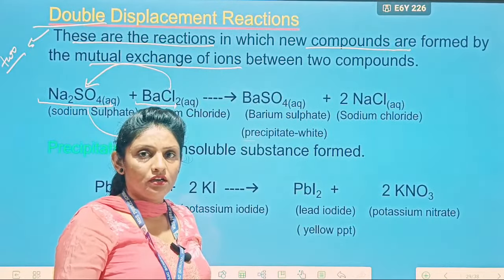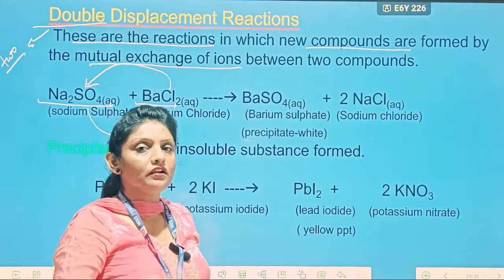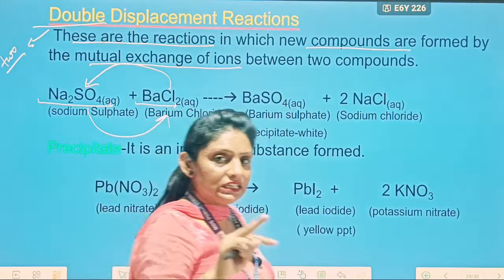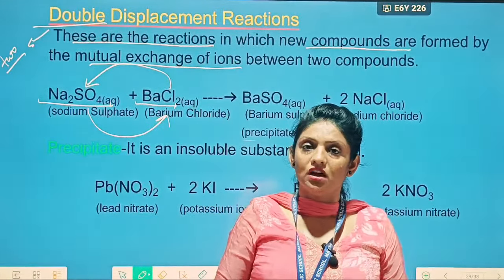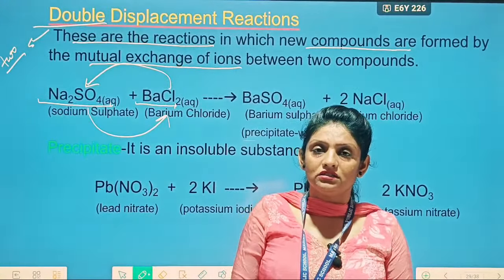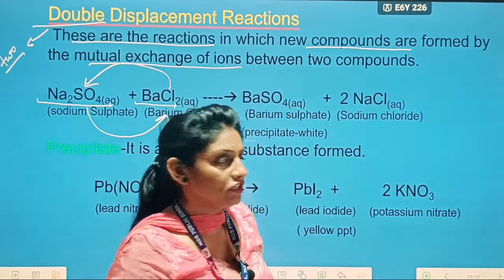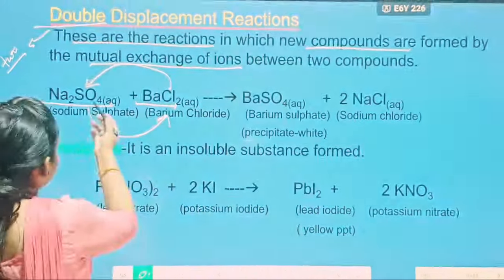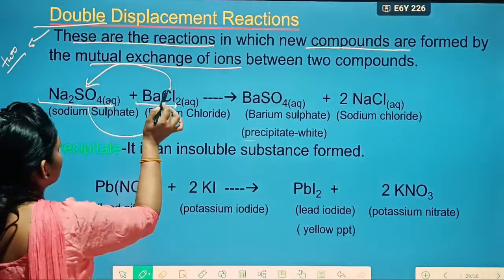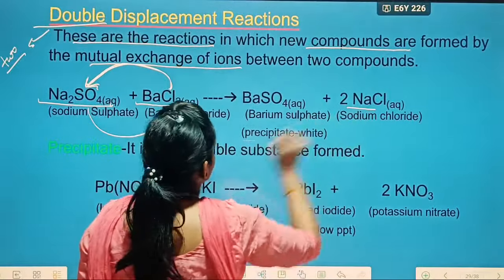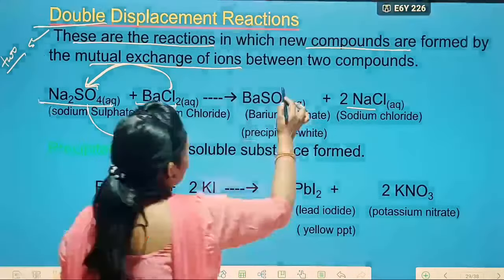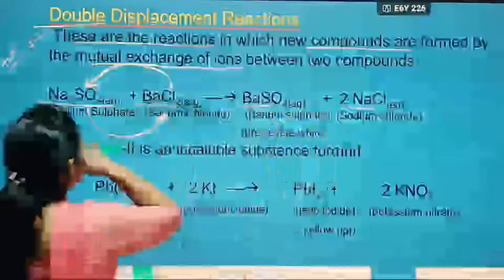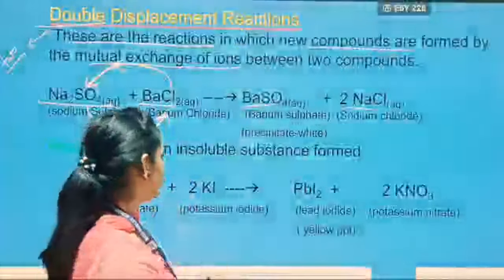So it is known as the double displacement reaction. Here Na₂SO₄ plus BaCl₂ — this chlorine is coming with sodium, then you get NaCl, and the sulfate ion exchanges as well. Two ions are exchanging, so it is known as the double displacement reaction. When only a single replacement takes place, it is known as only a displacement reaction, but if two ions are exchanging, then it is a double displacement reaction.